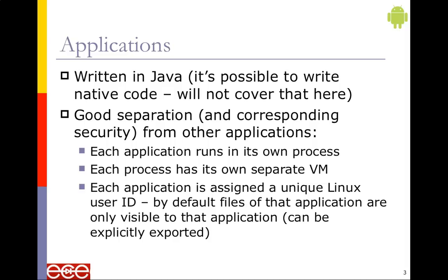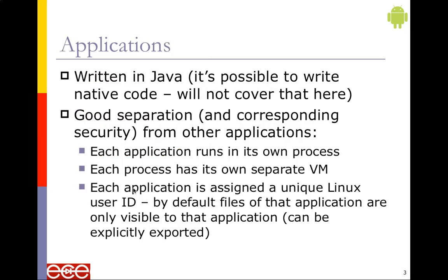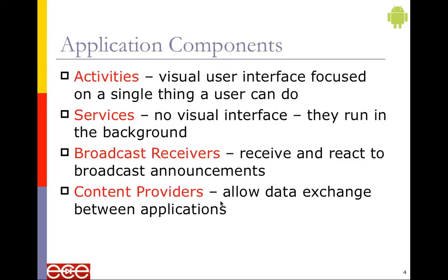Each application is assigned a Unix user ID, and by default the files of that application are only visible to that application — though they can be explicitly exported. Most of the file exchange is done through a shared server. So if you've got something within the application and you need to get it out, use internet access — send it somewhere, post it to a server, have the other process download it from the server. That's how chat actually works — we post messages to a central server and all processes pull from it.